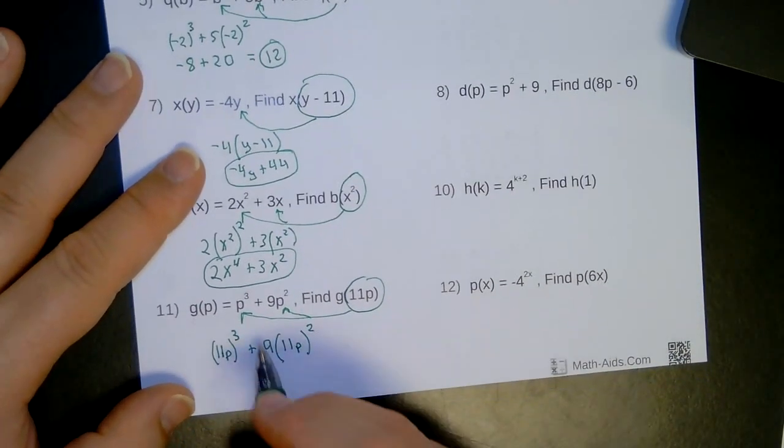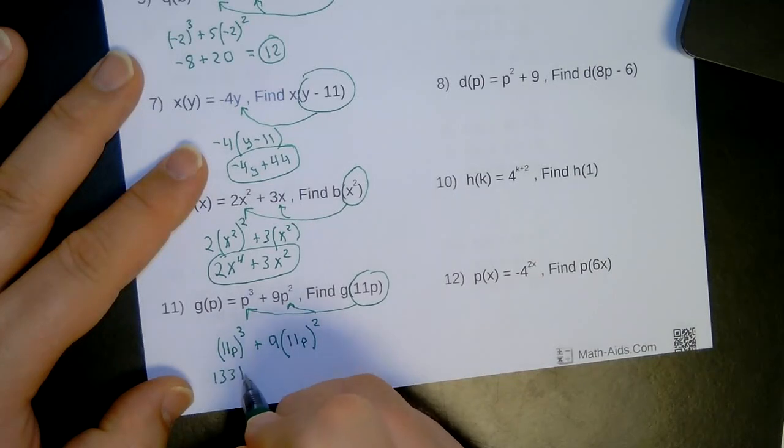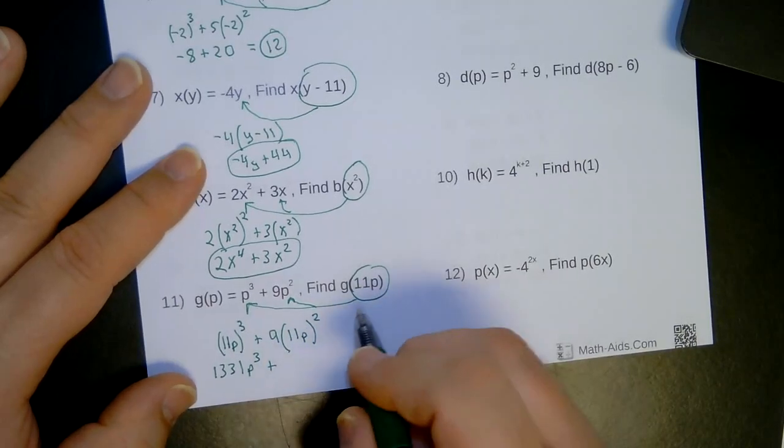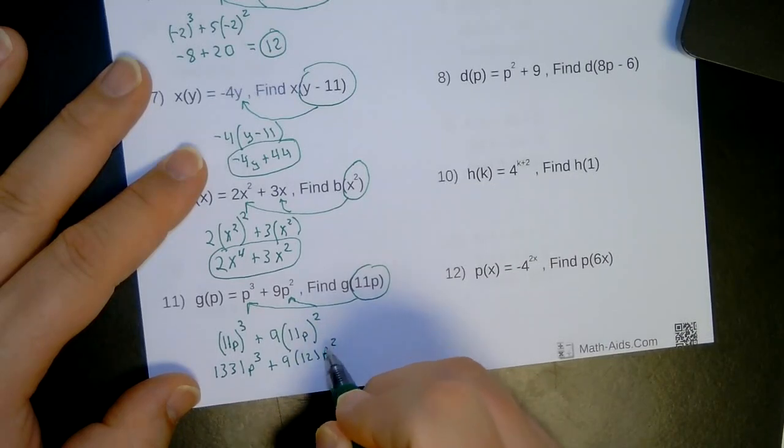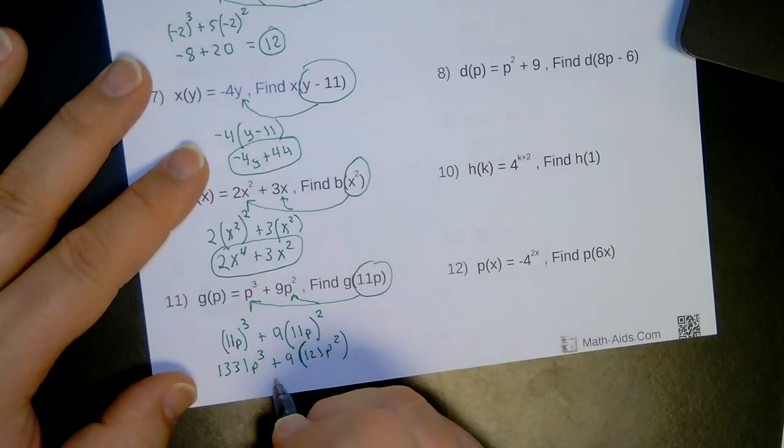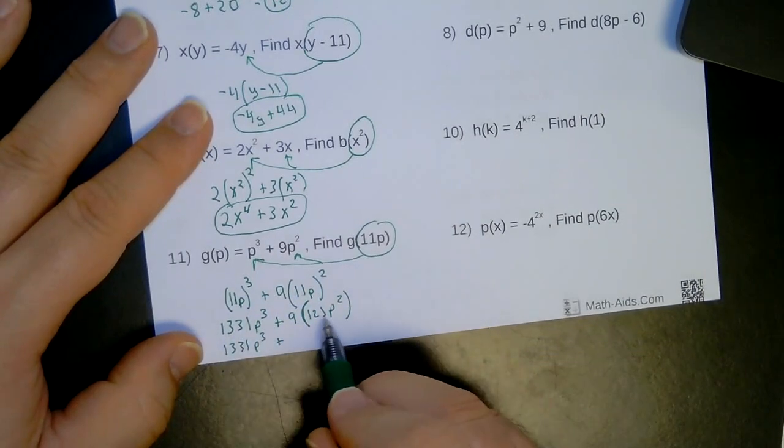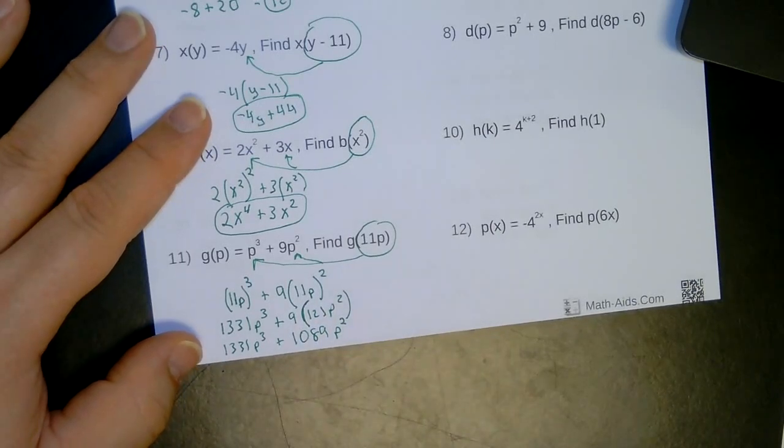Okay, so there you go. So now if I start cubing everything, 11 cubed is 1,331p cubed. Because remember this 3 has to go to the number and the variable. So don't forget that, the number and the variable. Plus, let's see, 9 times 11 squared would be 121 and p squared. Okay, 121, there's parentheses right there. Alright, so now the only thing I really have to look at is, just at the very end, 1,331p cubed. And 9 times 121 is 1,089p squared. And we are done.